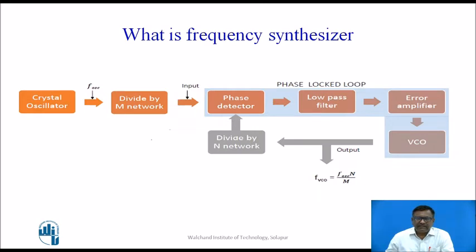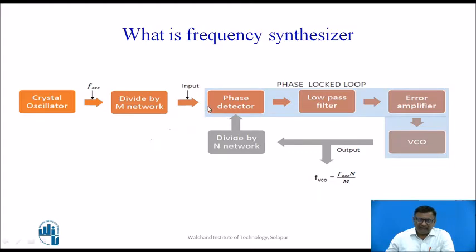The frequency synthesizer is built using IC 565, a PLL IC. Whatever is shown in the gray region is part of IC 565, which consists of a phase detector, low pass filter, error amplifier, and VCO. The remaining parts must be connected externally — for example, a crystal oscillator connected externally, divided by a divide-by-M network using counters, with its input given to the PLL. Another input comes from the feedback path, where the VCO output is divided by N and fed back to the phase detector.